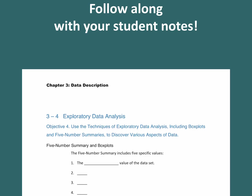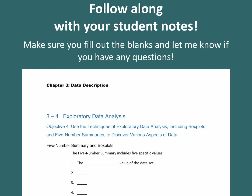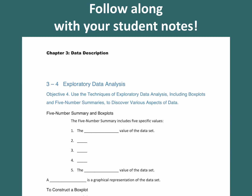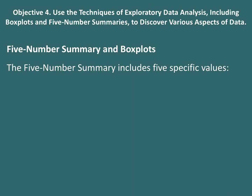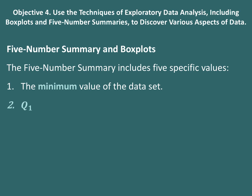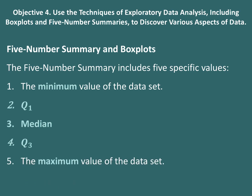Now let's follow along with the student notes. Using techniques of exploratory data analysis — including box plots and five-number summaries — we can discover various aspects of data. The five-number summary includes five specific values: 1) the minimum value of the data set, 2) the first quartile, 3) the second quartile or median, 4) the third quartile, and 5) the maximum value of the data set.